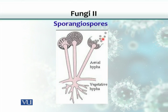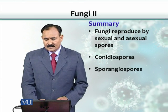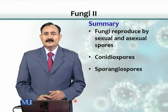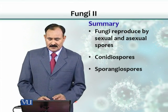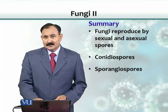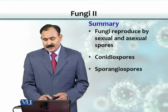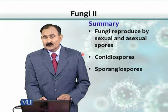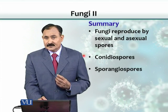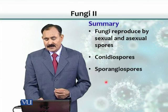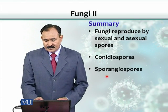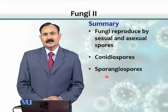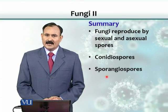In summary, fungi reproduce sexually as well as asexually. We didn't talk about sexual spores in this lecture, but we will in some other lectures. Asexual spores have two types: conidia spores and sporangiospores. Conidia spores are not enclosed in a sac, while sporangiospores are enclosed in a sac or bag-like structure.